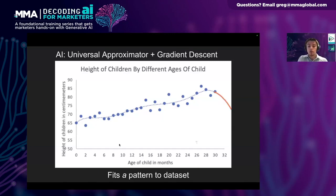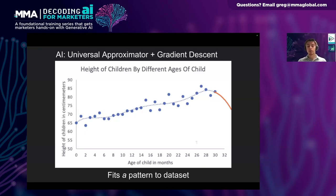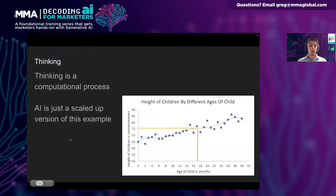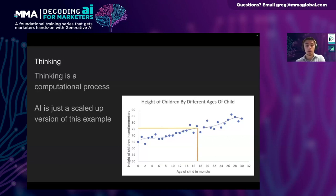Just because you fit a pattern to the data set doesn't mean you fit the right pattern. The blue function fits the data better than any straight line. However, notice that the predictions actually suggest children decrease in height at around 30 months — and keep decreasing for a few months after. So even though it fits the data set better, it doesn't make a good prediction outside the data set. AI will always fit a pattern to the data, but there are always lots of possible patterns, and only some will lead to a good prediction. When we say AI is thinking, what's really happening is it's just evaluating a function. Thinking for AI is not like thinking for humans.